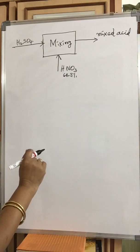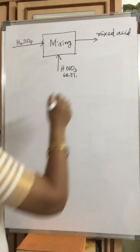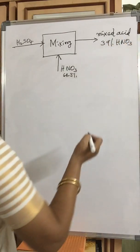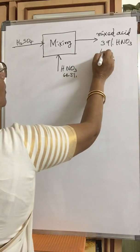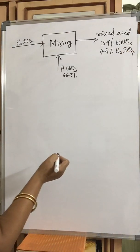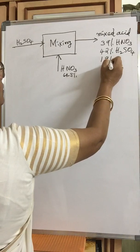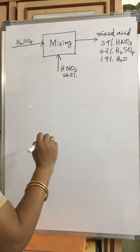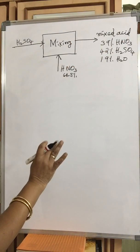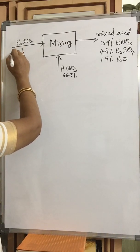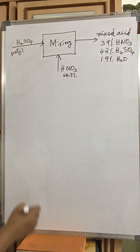All percentages are by weight. The mixed acid composition is given: HNO₃ is 39%, H₂SO₄ is 42%, and water is 19%. If you add all three, you get 100%. This is the information given. The question is: what is the strength — that is, the purity — of H₂SO₄? That is our question.